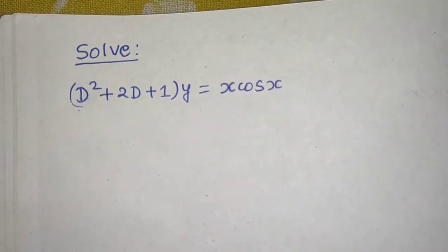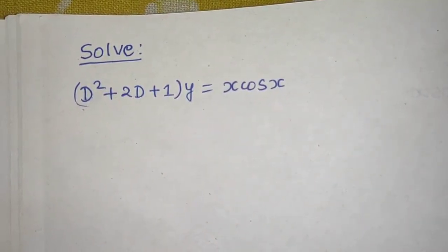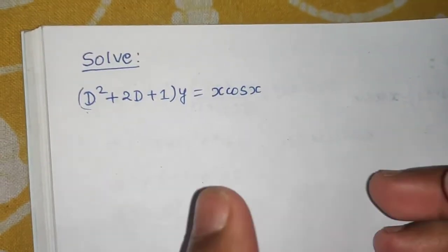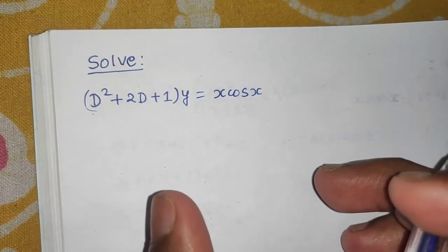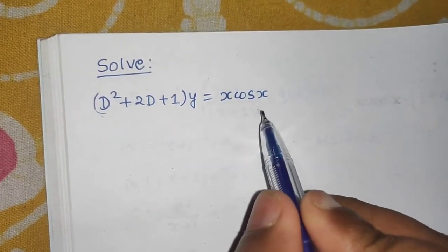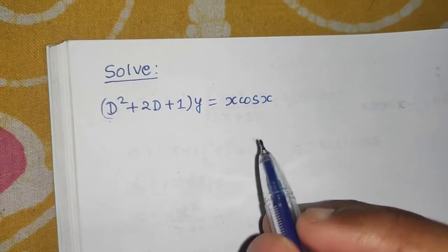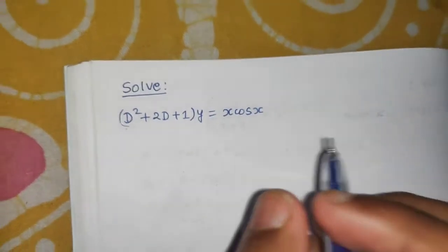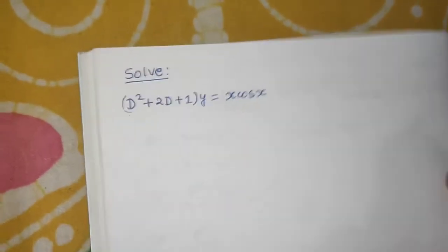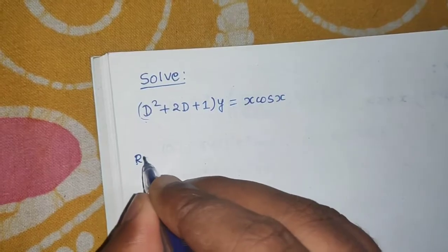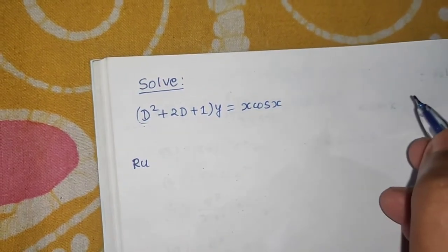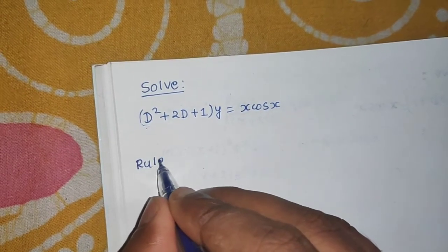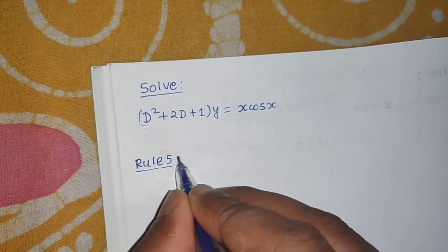Let's look at a question from linear differential equations with constant coefficients. We need to solve this equation. We can easily find the complementary function, but the RHS, which is Q here, is x times cos x. For this we have a rule — this is Rule 5, in continuation with the four rules discussed in a previous video (link in the comment box).